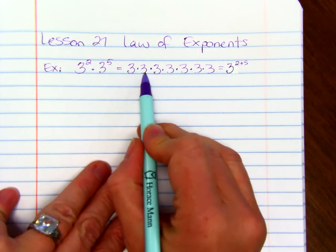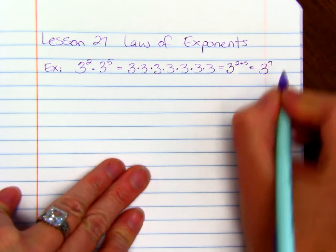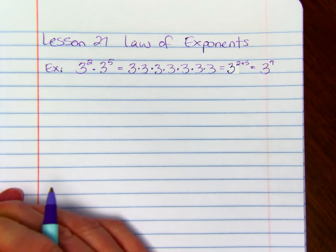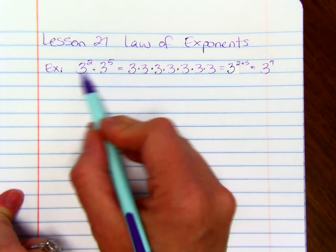If you notice, there's 2 here, and then we're adding another 5. So the final answer is just 3 to the 7th power. So we can just add exponents if we're multiplying and the base is the same.